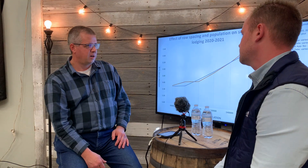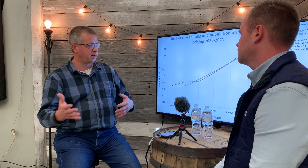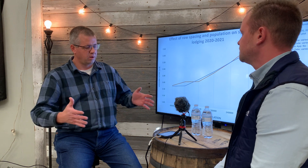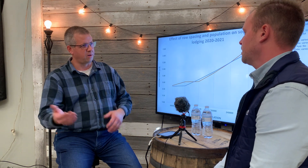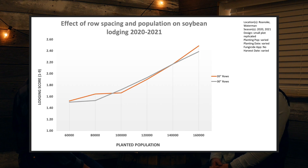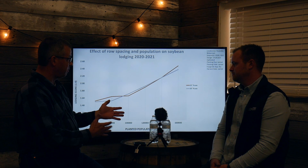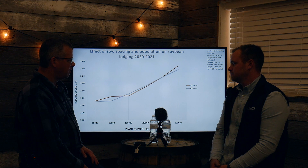When talking about narrow rows, one concern is whether you'd see more lodging. We know as we crowd plants they grow a little taller and are more likely to fall over. What we saw is yes, at a higher population we see more lodging — on the same one-to-nine scale, this is more leaning than lodging. But we did not see a correlation between row width and lodging, which is kind of interesting.